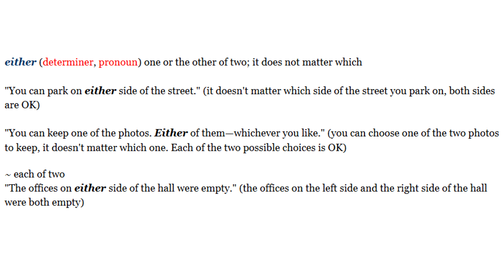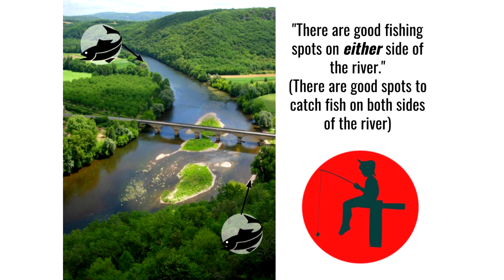Either can also mean 'each of two.' For example: 'The offices on either side of the hall were empty' — this means the offices on the left side and the right side of the hall were both empty. 'There are good fishing spots on either side of the river' — this means there are good spots to catch fish on both sides of the river.